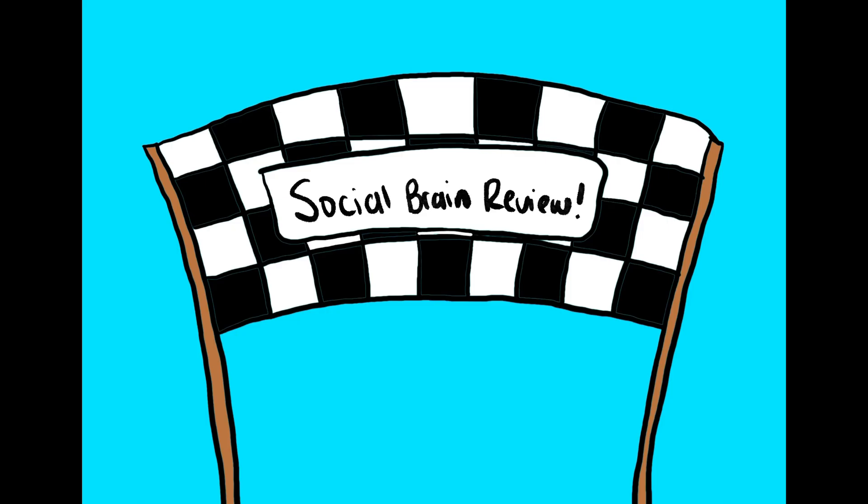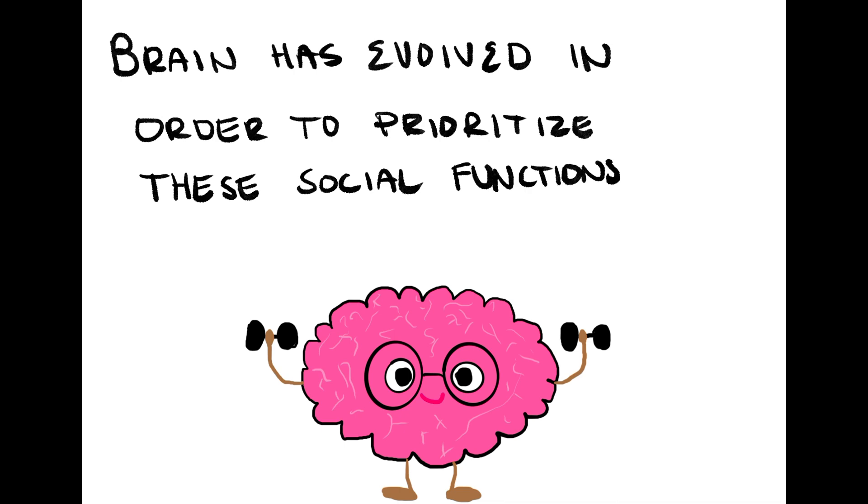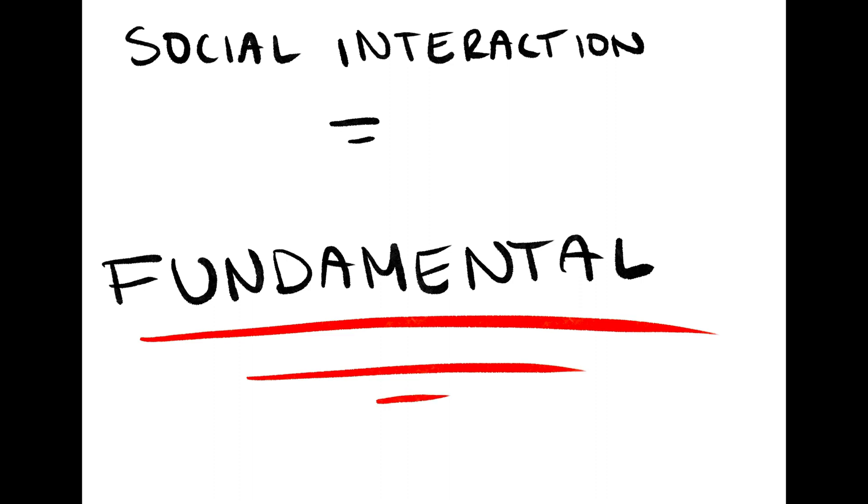All right, this brings us to the end of our brief review on the social brain. The main takeaway from this video should be that humans are innately social creatures, and our brain has evolutionarily evolved in order to prioritize these social functions. Social interaction is a fundamental and crucial need of human beings, and we orient our behavior in order to meet this need.